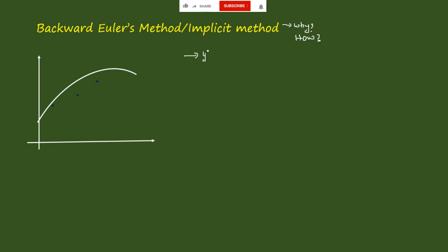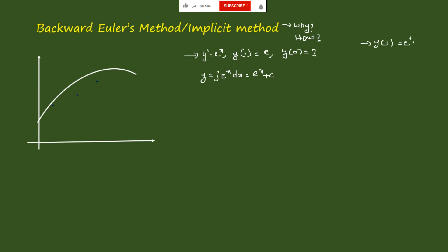If you have an example where y' = e^x, given that y(1) = e, and you have to find the value of y(0), this is a simple case — you can just integrate it. Then y = ∫e^x dx = e^x + c. Using the initial condition y(1) = e^1 + c = e, we get c = 0. So y(0) = e^0 = 1.